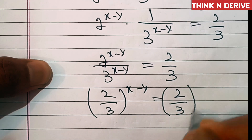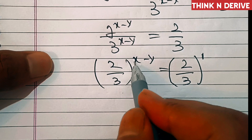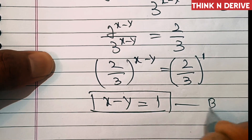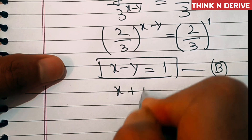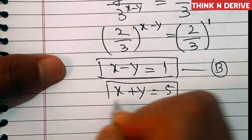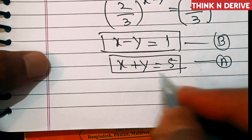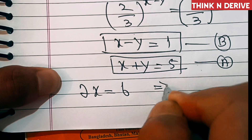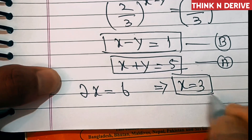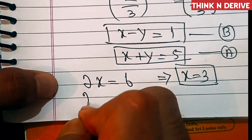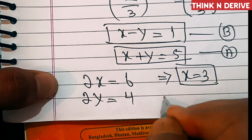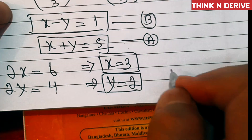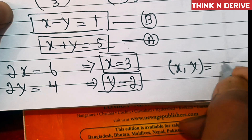That is 2 over 3 power x minus y equals 2 over 3 power 1. Since the bases are the same, the exponents are equal: x minus y equals 1. Call this equation B. Equation A was x plus y equal to 5. Adding equations A and B gives 2x equals 6, so x equals 3. Subtracting gives 2y equals 4, so y equals 2. The solution is x comma y equal to 3 comma 2.